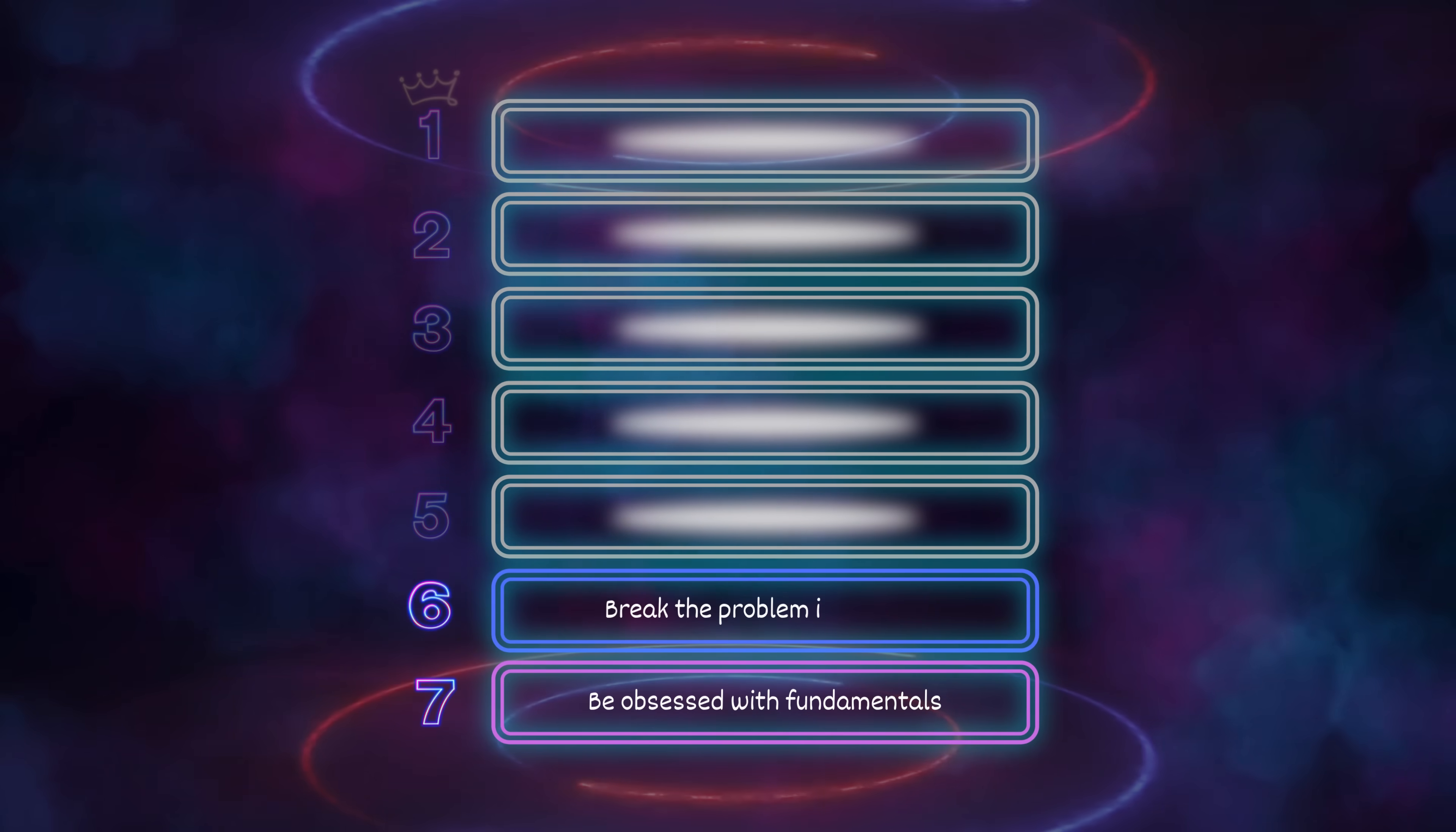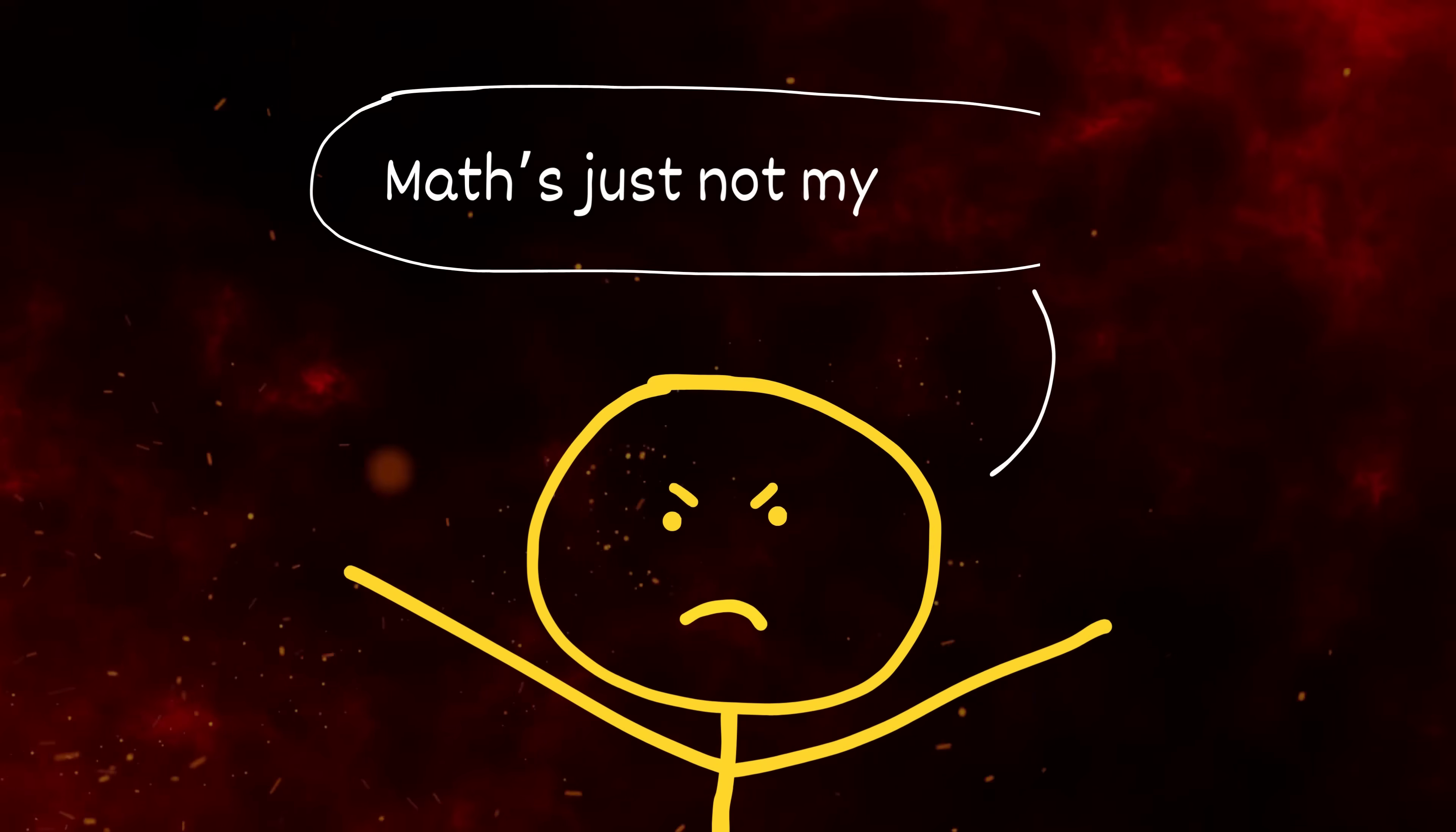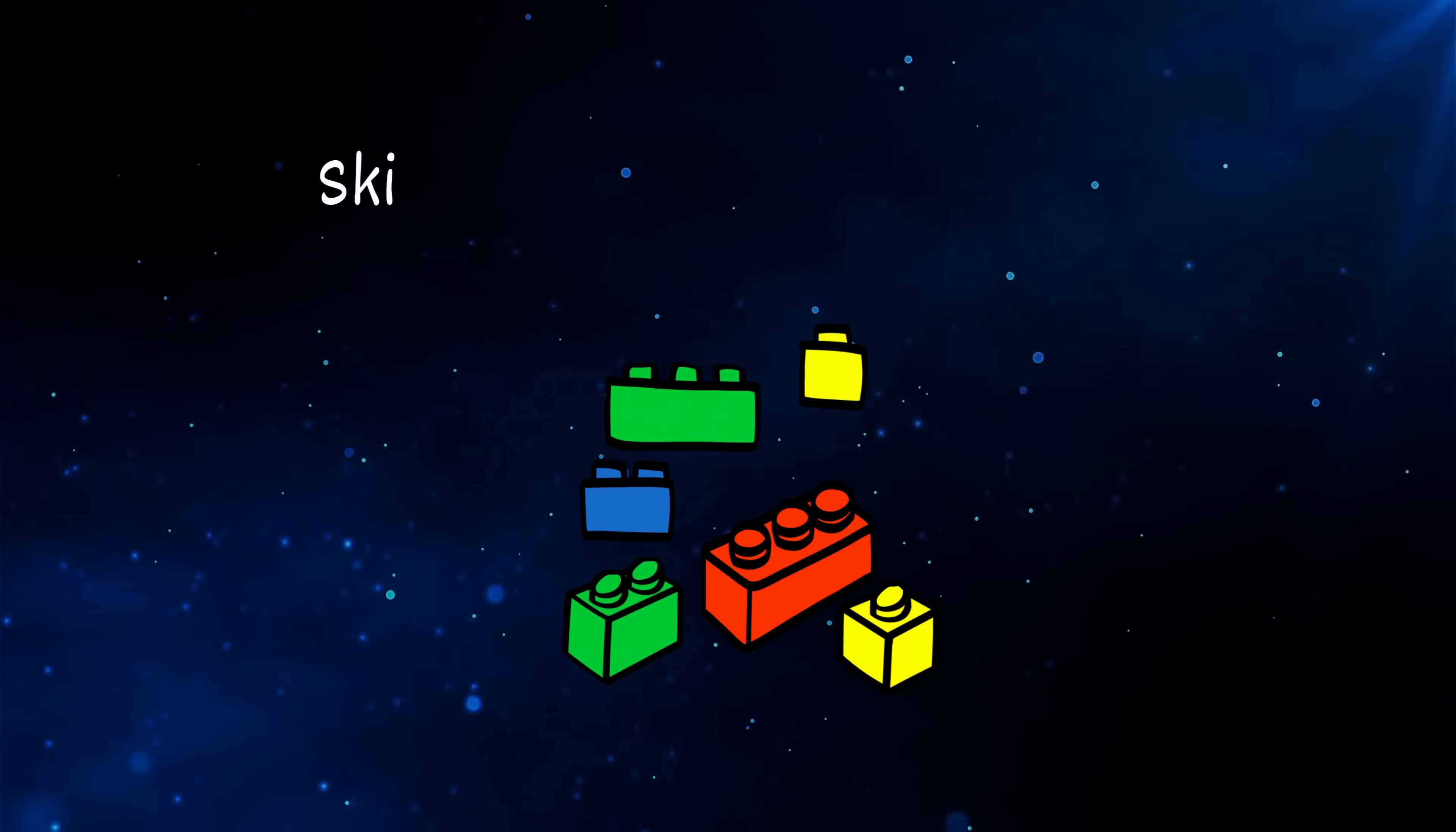Number 6: Break the problem into parts. Oh no, you're stuck again. I bet you looked at the problem for 17 seconds and said, math's just not my thing. Shut up, idiot. Math isn't a personality trait, it's a skill. And guess what? Skills are built, not inherited.